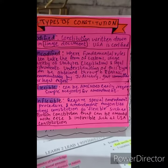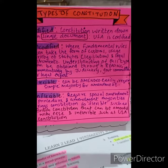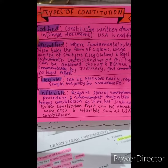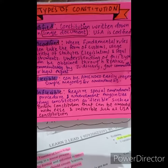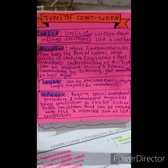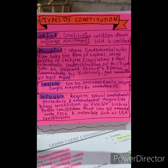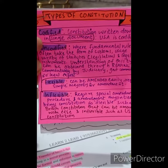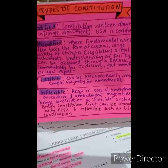We have flexible constitution where there is an easy amendment process, and it requires a simple majority for amendment. Then we have inflexible constitution, which requires a special amendment procedure and special majorities for amending the constitution — inflexible is the opposite of flexible, and has a rigidity process.